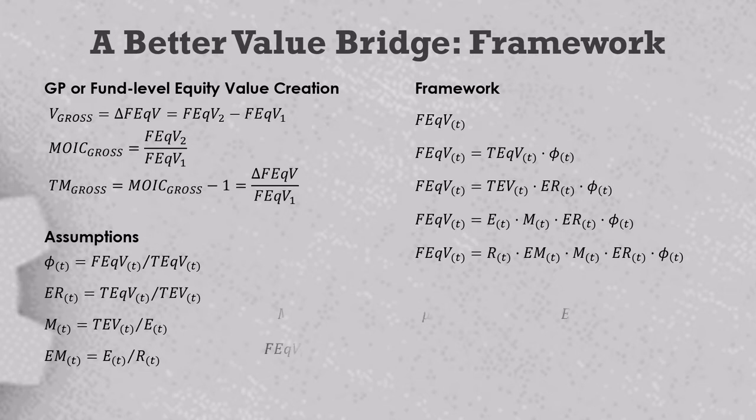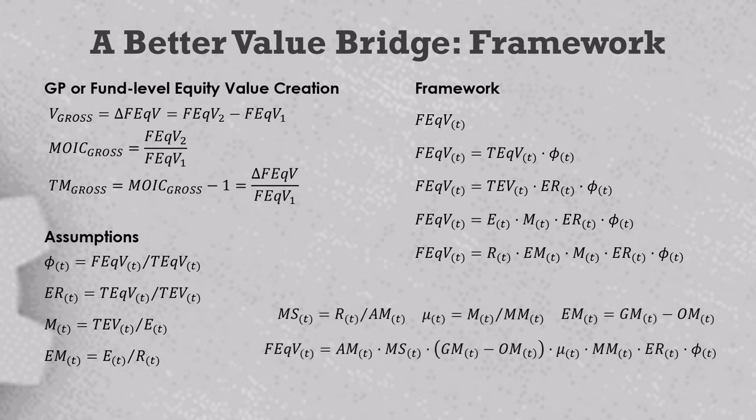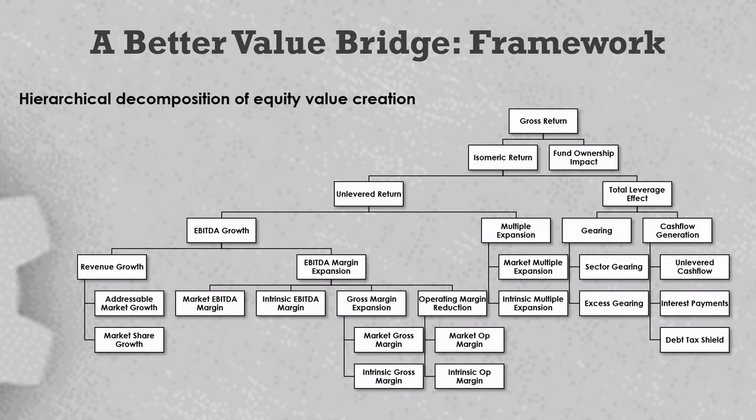Now we can take this further as shown here, but the point is that we define all the value creation variables in a way that maintains a mathematically rigorous relationship to fund equity value, which is the number that you'll find in the GP's quarterly report. And this allows us to create a hierarchical decomposition of equity value creation, like this one here. There are no plugs. Everything could be split up and added back together again.